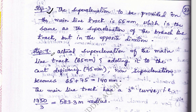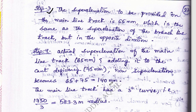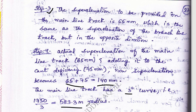In step 4, the actual super elevation of the main line track is 65 mm. Adding the cant deficiency of 75 mm gives a total of 140 mm. The main line track has a 3-degree curve as given in the question, and the radius is calculated using R = 1750/D.